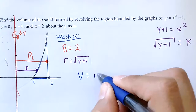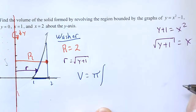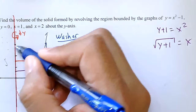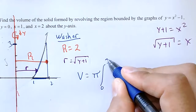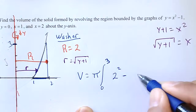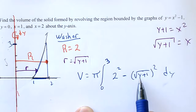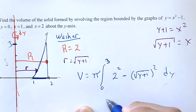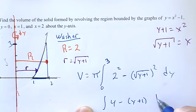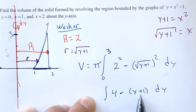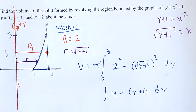Setting up the volume: pi times the integral from 0 to that upper limit, of big radius — 2 — squared, minus little radius — square root of y plus 1 — squared, dy. The radical and the square will cancel, giving me y plus 1. The 2 squared gives 4. Just be careful that the minus sign is distributed properly when you integrate. I'll let you figure out the answer.